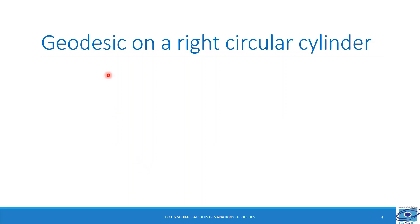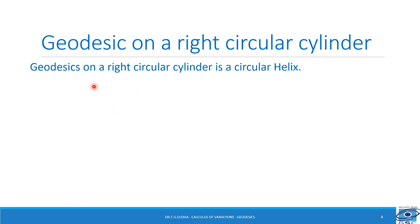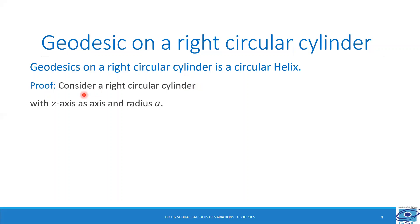First, let us study the geodesics on a right circular cylinder. Here, we need to prove that the geodesic on a right circular cylinder is a circular helix. A helix is a curve which is similar to the spring formed in a ballpoint pen. Let us begin the proof. For this, let us consider a right circular cylinder with z-axis as axis and radius A, that is the radius of the base circle is A units.